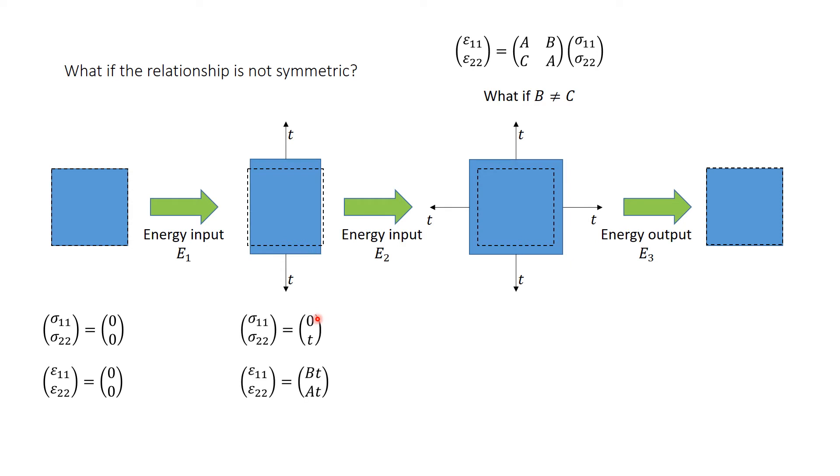In the second stage, the applied stresses are equal to zero in the horizontal direction and t in the vertical direction. When I substitute zero and t in this relationship, I will get values for the strains that are equal to bt and at. If I put zero here and multiply this by that, I will get b multiplied by t. And when I multiply this by that, I'm going to get a multiplied by t, giving these strains at the end of stage two.